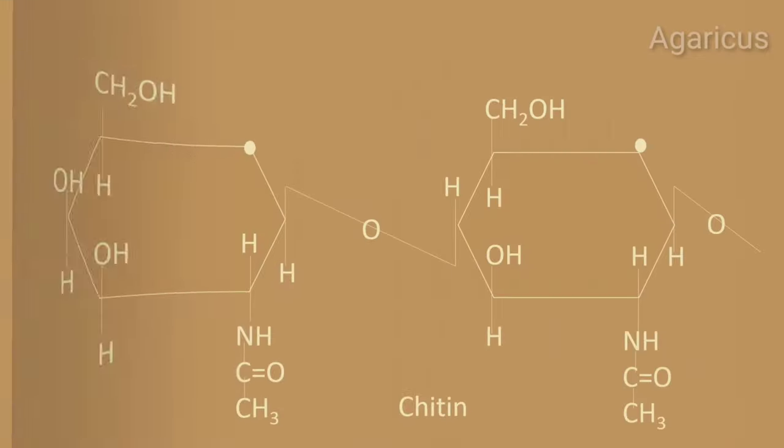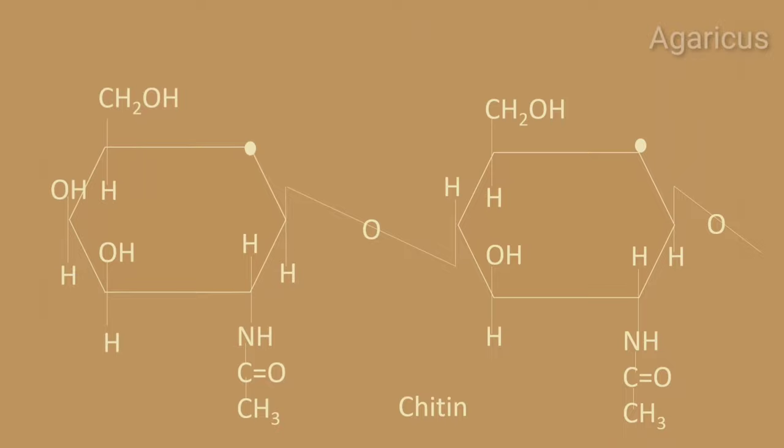Here is the structure of chitin. The linkage is beta-1,4.